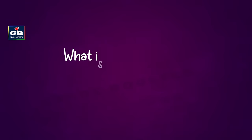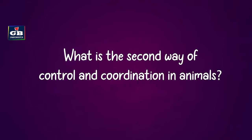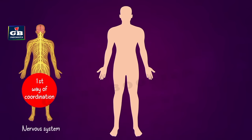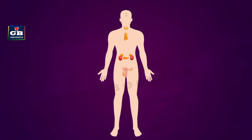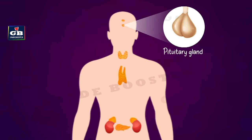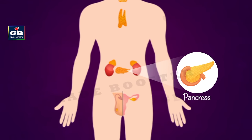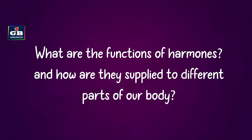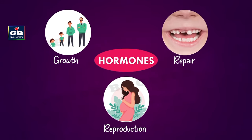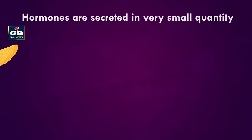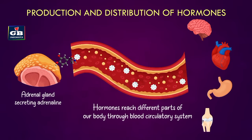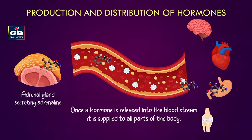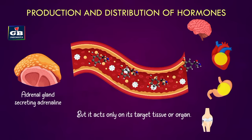The second way of control and coordination in animals is done by the endocrine system. The endocrine system comprises various endocrine glands such as the pituitary gland, thyroid gland, adrenal glands, pancreas, testes, and ovaries. These glands secrete special chemical compounds called hormones. Hormones help control many body functions such as growth, repair, and reproduction. They are secreted in very small quantities and reach different parts of the body through the blood circulatory system, acting only on their target tissue or organ.